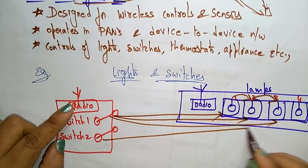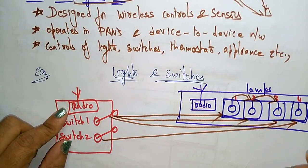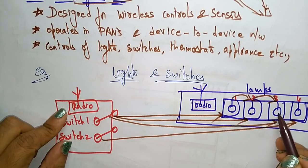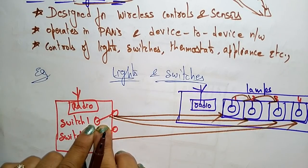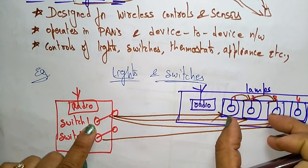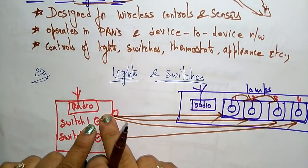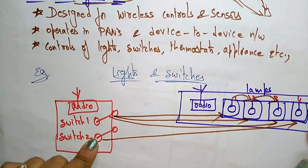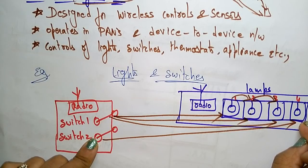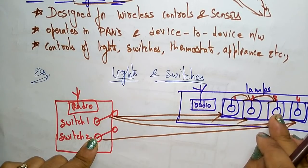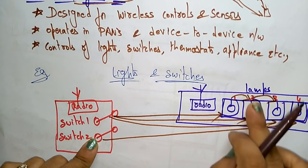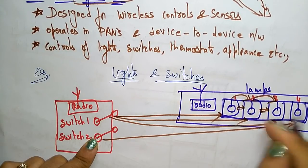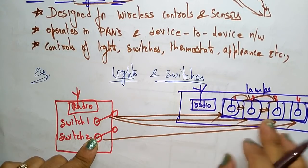For the fourth lamp, switch two will be used. So with the help of switch one, we are turning on three bulbs, and with the help of switch two we are lighting the fourth bulb. All will be on at a time — one sends signal to two, two sends signal to three. The signal is passed only to the adjacent nodes; only to the adjacent nodes is the signal passed.